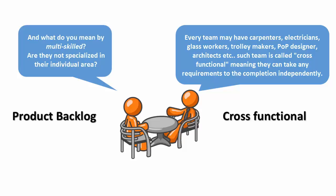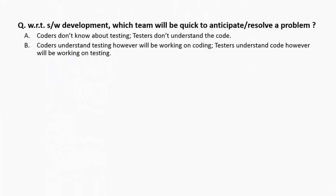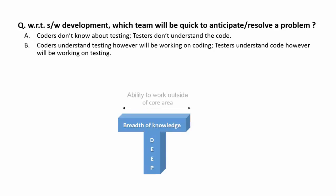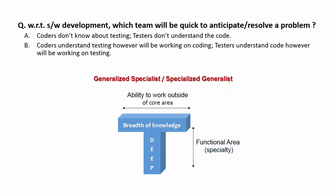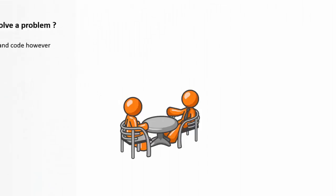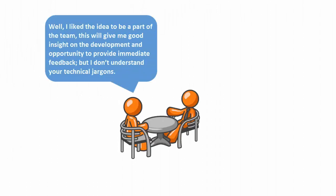And what do you mean by multi-skilled? Are they not specialized in their individual area? The members are expert in their own functional area, but they also understand the technicalities of other work in the release. We train them to become generalized specialists — or specialized generalists if you prefer. In this way they can help each other when needed, which helps us deliver a requirement quicker. I like the idea of being part of the team, as it gives me good insight on the development and opportunity to provide immediate feedback.